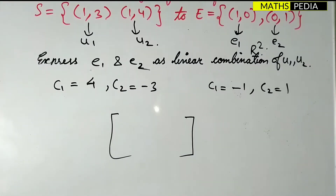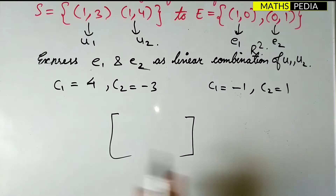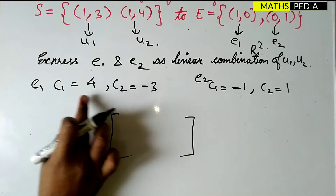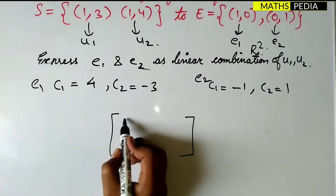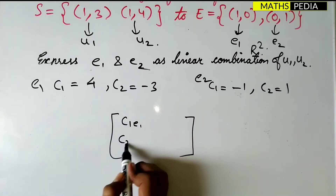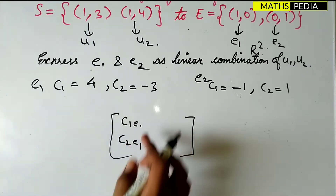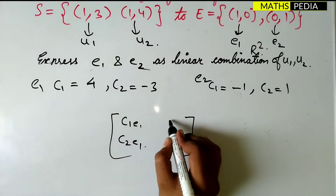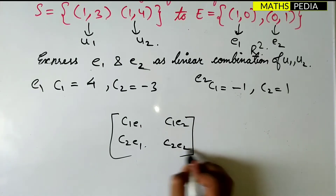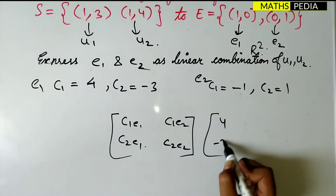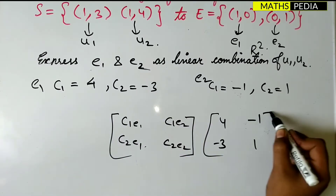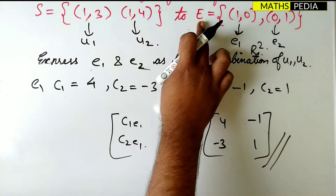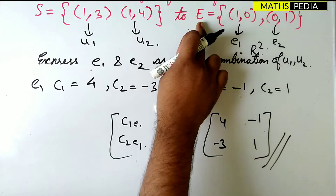Now I have to arrange the results in matrix form. For the e1 case, arrange c1 and c2 in a column; for the e2 case, arrange in the second column. So the change of basis matrix from S to E is: first column [4, −3] and second column [−1, 1]. This is the final answer. Now we'll find the change of basis from E to S.